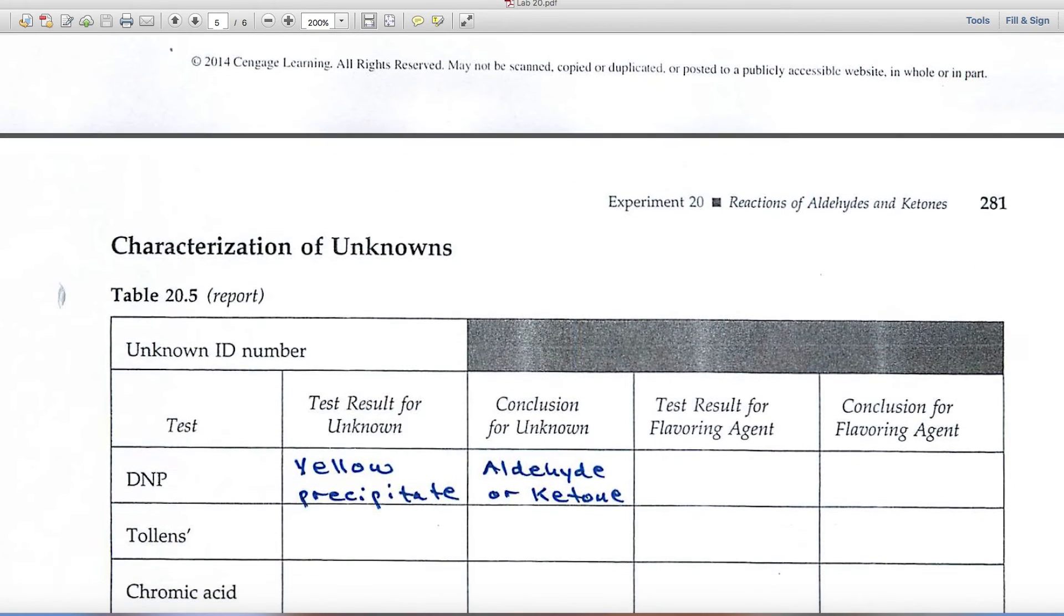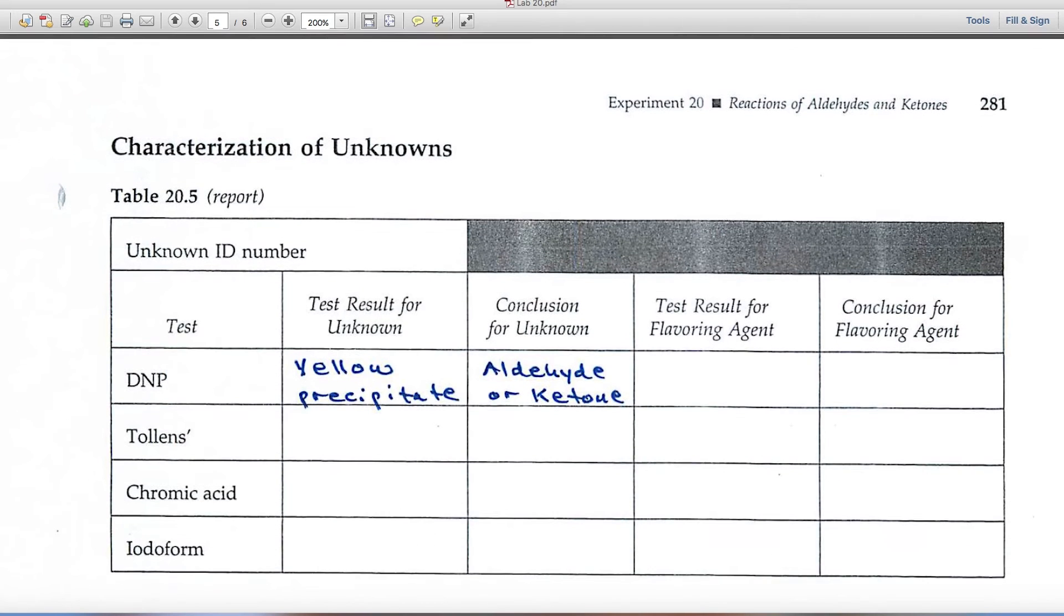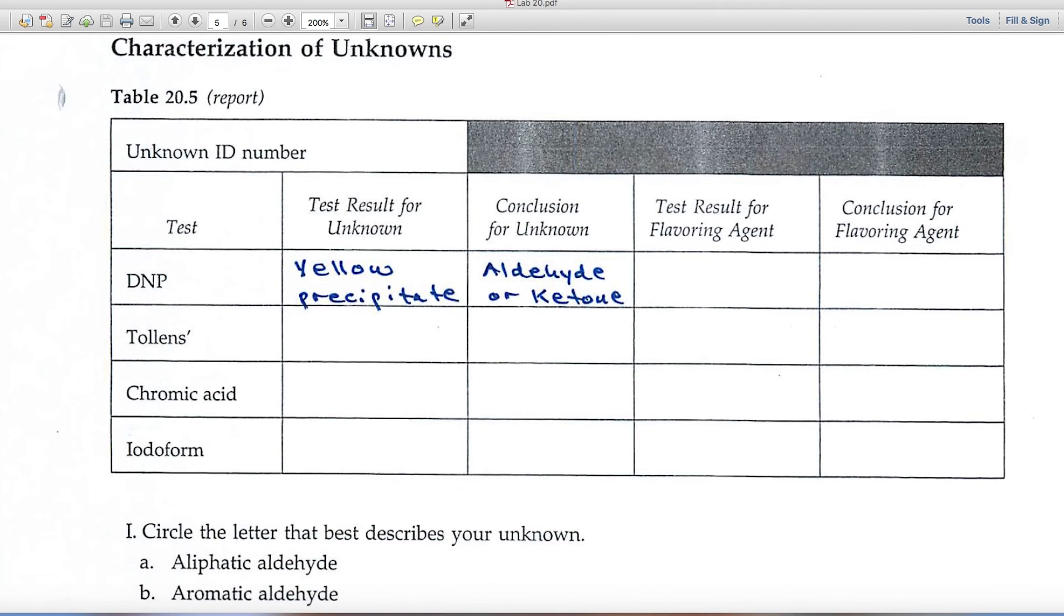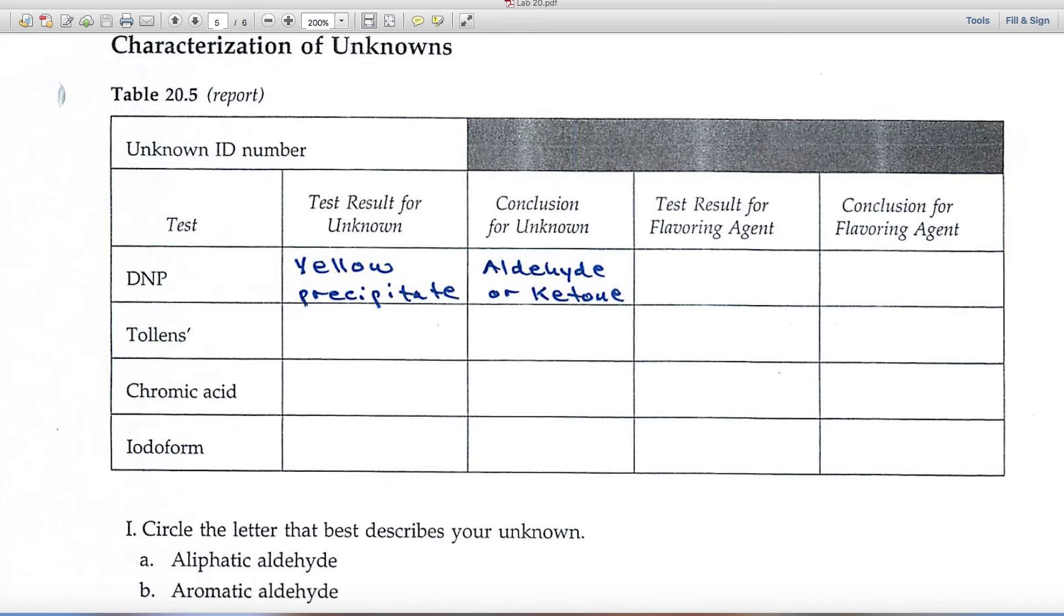Then table 20.5 is where you'll summarize this data. For example, under the DNP test, result for an unknown, maybe you would say that it forms a yellow precipitate.